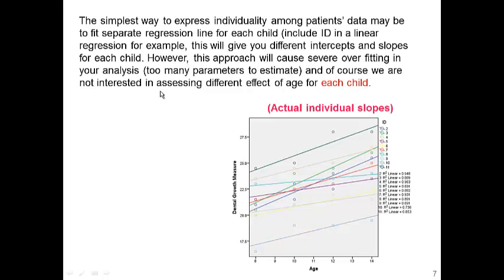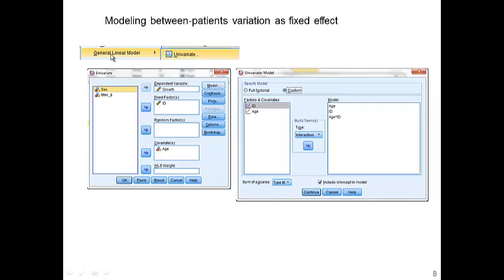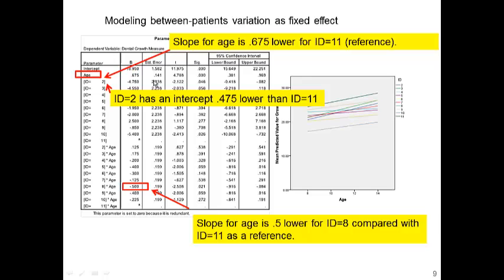However, this approach will cause severe overfitting because there are too many parameters to estimate, and we are not interested in assessing a different effect of age for each child. We could include ID as a fixed factor — a categorical variable — putting age and ID under main effects with the interaction between age and ID. This fits a large model with parameters indicating different intercepts and different slopes for each patient.